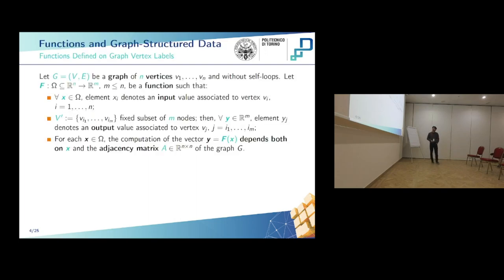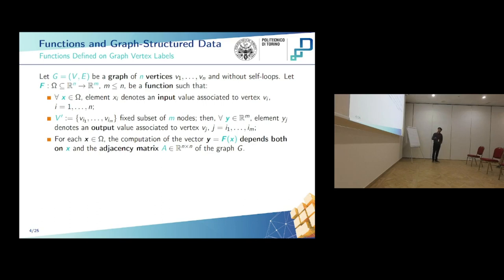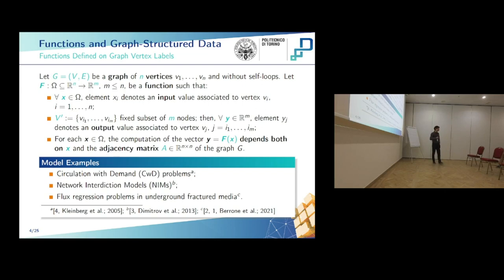Starting with the description of the problem, we take into account functions defined on graphs. Given a graph G made of n vertices v1 through vn, we consider a function f that goes from omega in R^n to R^m, such that for each x in omega it returns a vector y in R^m that depends both on the input x and the adjacency matrix A of the graph. The elements of the input vector x represent input values associated to each vertex of the graph, while the elements of the output vector y represent output features corresponding to a subset of output vertices. Such functions can be used to model problems like circulation with demand problems, network interdiction models, or fracture regression problems in underground fractured media.